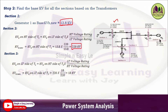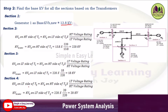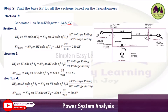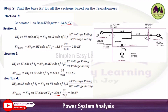For section 3 (LT side of T2): base kV = HT side base × (LT/HT rating) = 220 × (18/220) = 18 kV. For section 4 (LT side of T3): KVB = KVB on HT side of T3 × (LT/HT voltage rating) = 220 × (20/220) = 20 kV. These are the base kV values for all four sections.